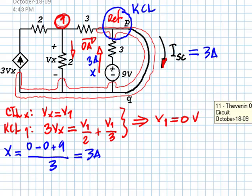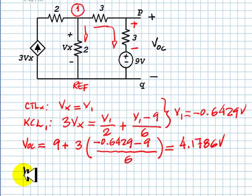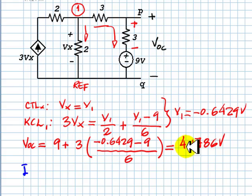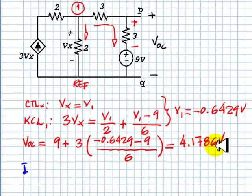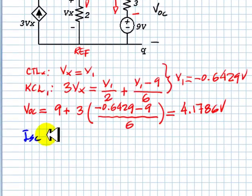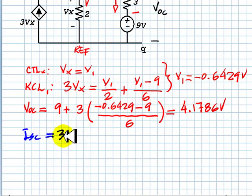We are ready to go back and say, if the open circuit voltage is 4.1786 volts and the short circuit current is 3 amps,